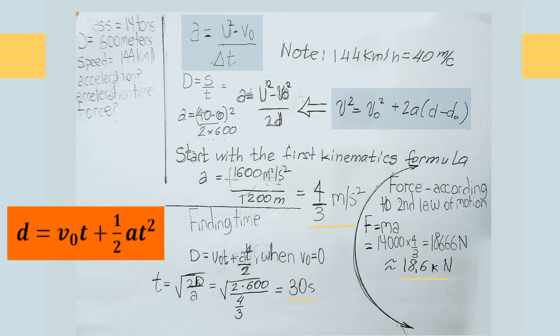And we rearrange this formula, we get time equal to 2 distance divided by A taken in the square root. And if we plug in the values, we will get 30 seconds.